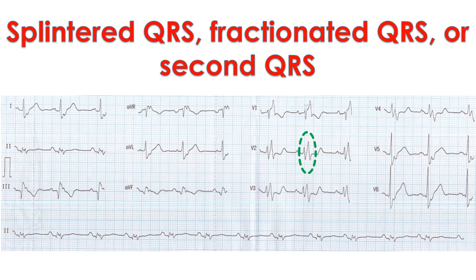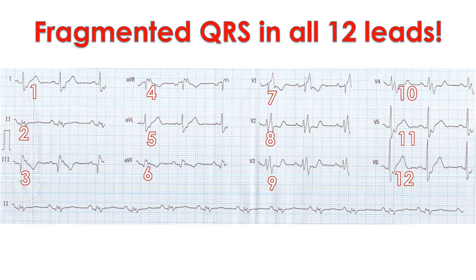Fragmented QRS is associated with a higher arrhythmic risk and a larger atrialized right ventricular area. Those with fragmented QRS also had more severe tricuspid regurgitation. The extent of fragmented QRS is measured by the number of leads showing FQRS, and QRS duration is longer in those with FQRS.